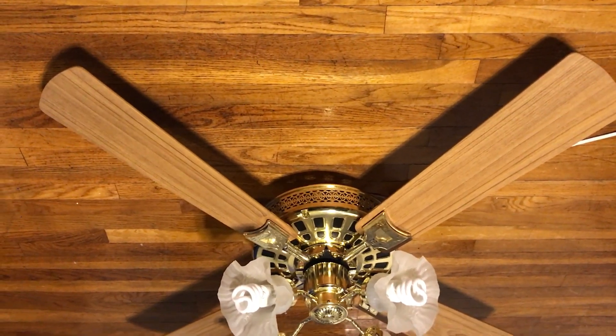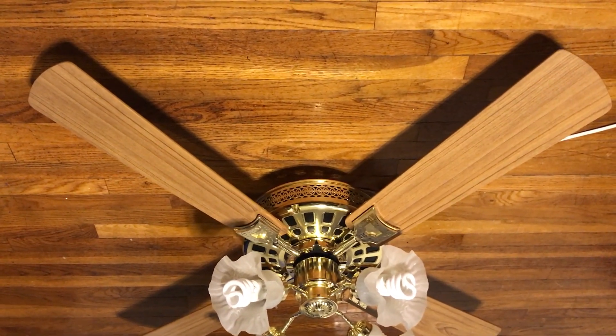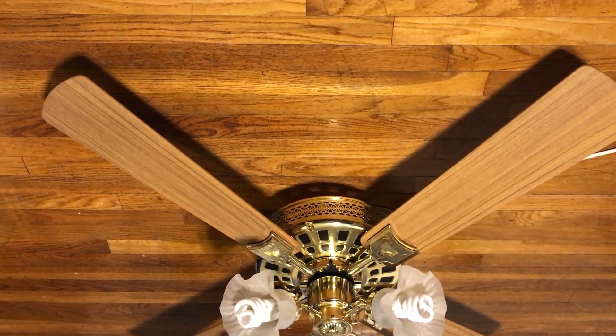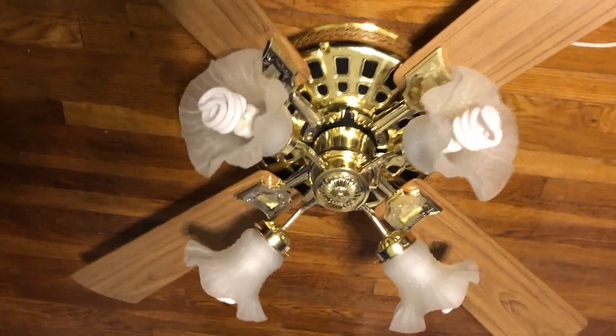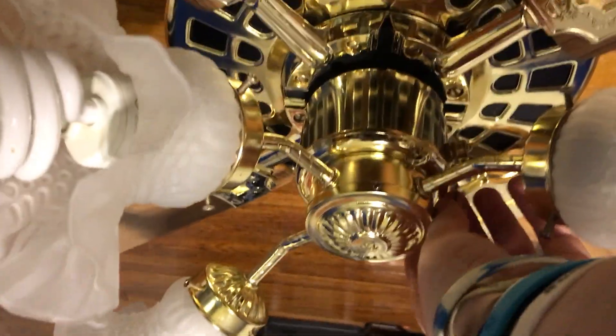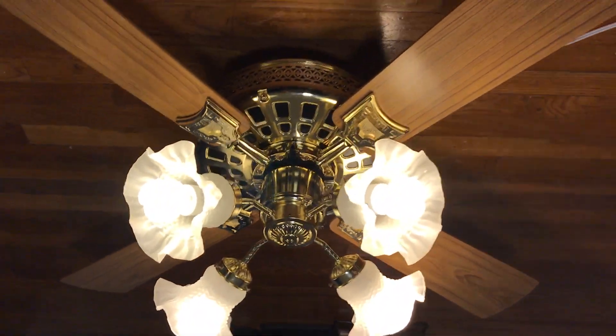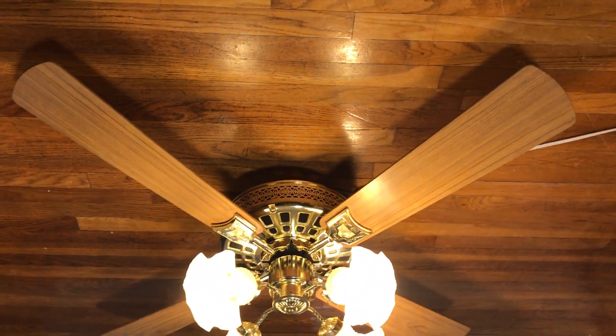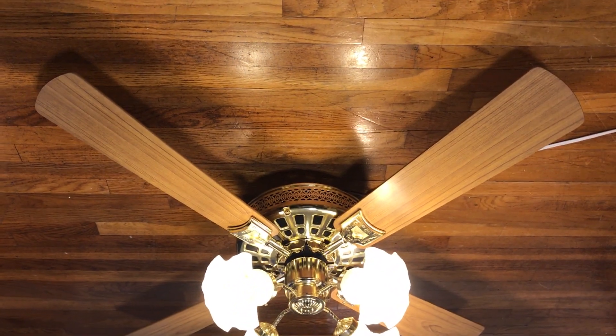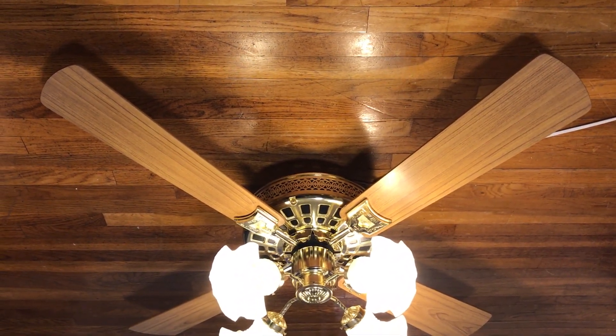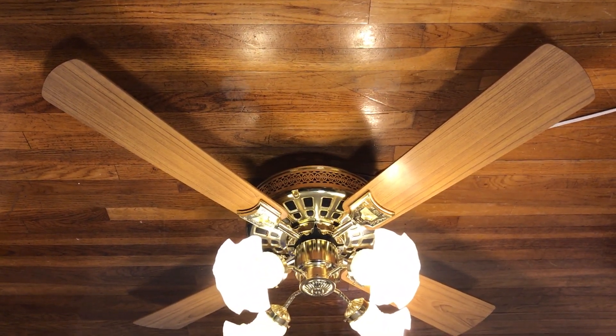That was the last time I saw them until I saw videos of them on YouTube and such. I saw some fans similar to them, but they weren't actual Veranda Deluxes. This light kit I like because it looks very similar to the light kit that's on my grandmother's Bahamas in the living room. I feel like that type of light kit looks very good on fans from the 80s, especially with these type of shades.